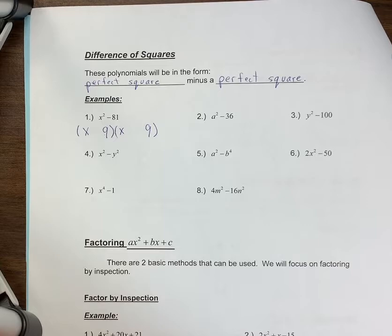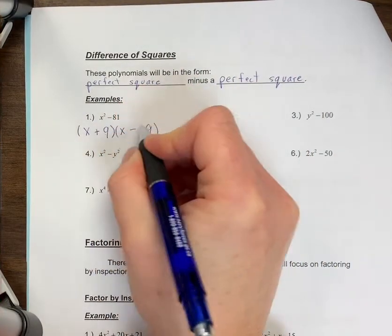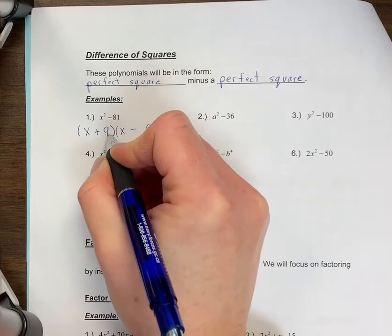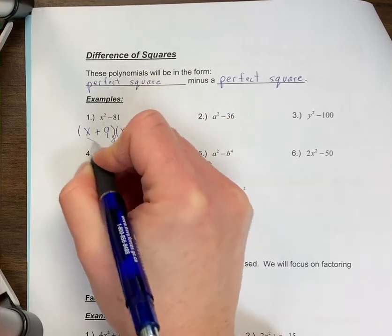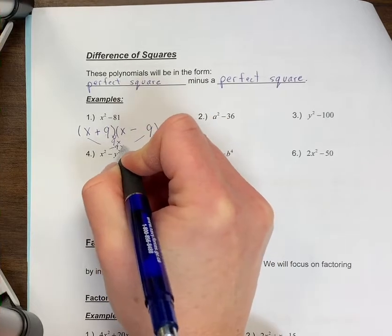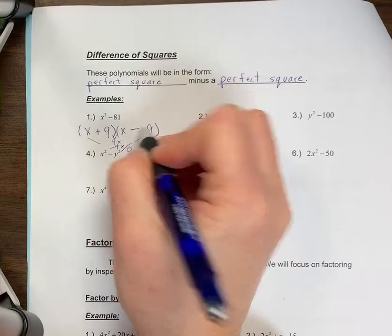Now the signs are always going to be a plus and a minus, or you can write minus first then plus. The reason is when you check your outside and inside terms, you get +9x and -9x, which cancels out. This is why there's no middle term.